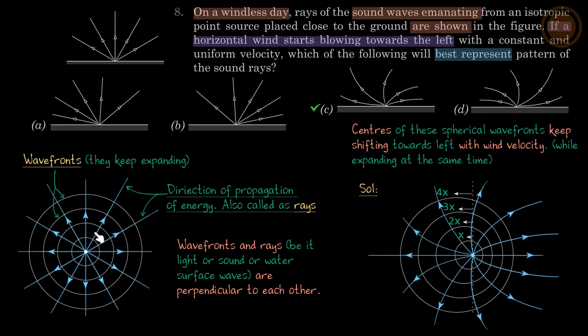So this is nothing but direction of propagation of energy, also called as rays. So these lines represent direction of propagation of energy, also called as rays.